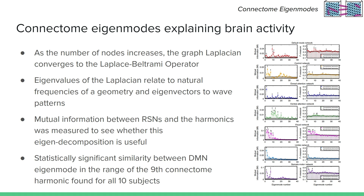Why would it be useful to consider connectome eigenmodes? As the number of nodes increases, the graph Laplacian converges to the Laplace-Beltrami operator, which is relevant for geometric eigenmodes. The eigenvalues of the Laplacian relate to natural frequencies of the geometry, while the eigenvectors relate to the wave patterns themselves. The mutual information between RSNs and the harmonics was measured, and there was a statistically significant similarity between the default mode network and a harmonic in the range of the 9th connectome harmonic in all 10 subjects. Visual, somatomotor, and limbic networks show similarity to low-frequency harmonics, while control, dorsal attention, and ventral attention networks match a broad range of connectome harmonics.